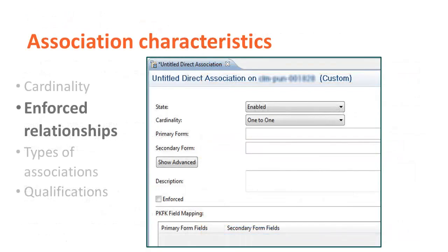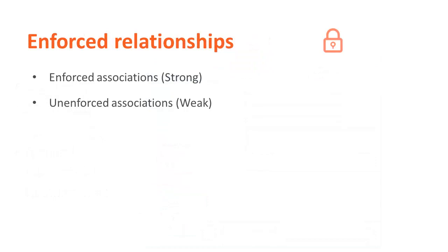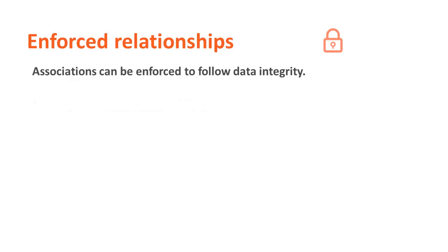The next characteristic is enforcement in relationships. It's important to understand how an enforced association works. If an association is defined as enforced, BMC Remedy AR System server ensures data integrity is maintained. Data integrity means that the server will enforce the cardinality of the association and will ensure referential integrity. Thus, an entry will not be able to refer to another entry that does not exist. Now let's examine how an enforced association ensures data integrity.